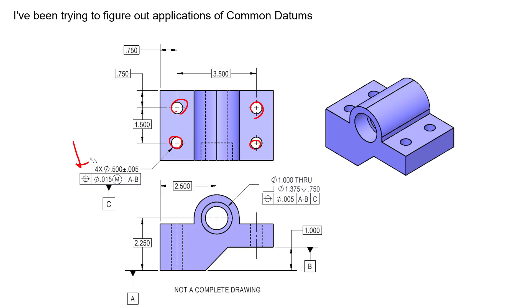Then we define that pattern of features as datum C, and that can control translation in two directions. We're also going to be able to clock from that pattern. That's where we see this feature over here—the through hole and counterbore diameter—being controlled with position with respect to datum plane A-B.